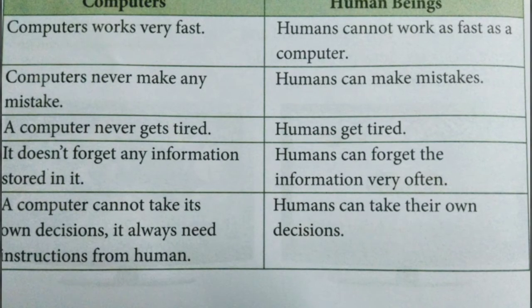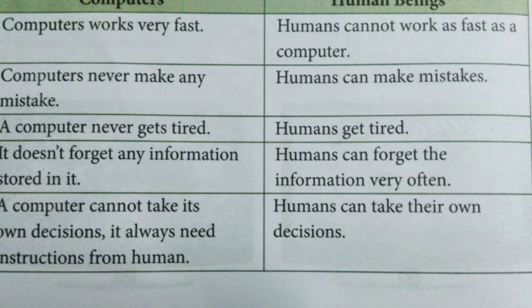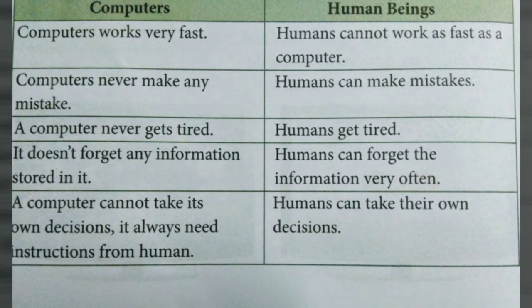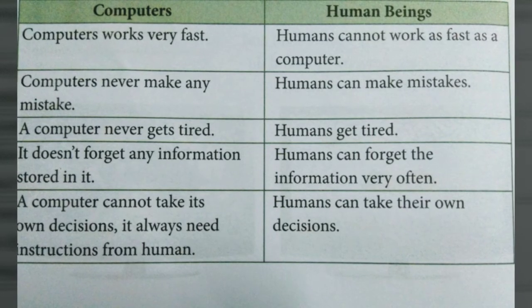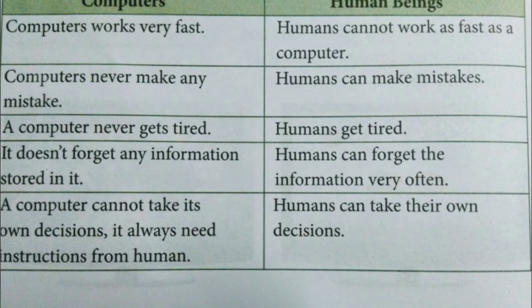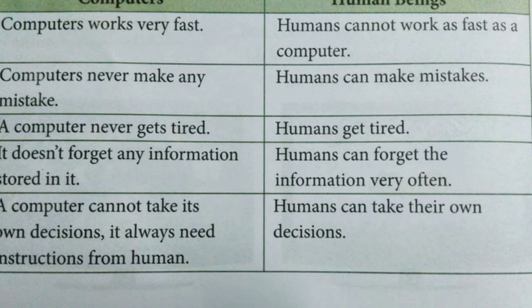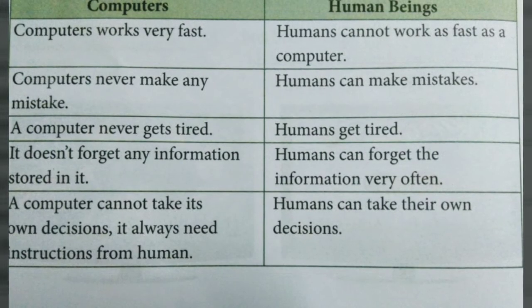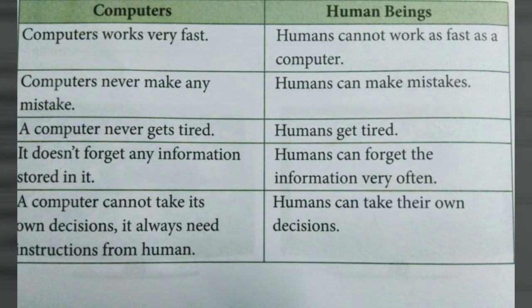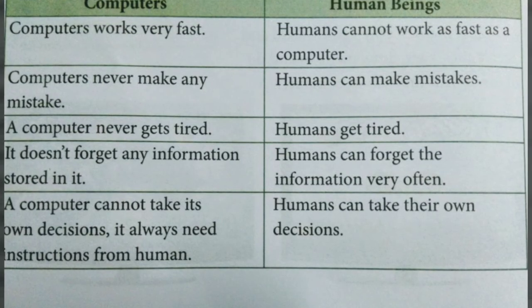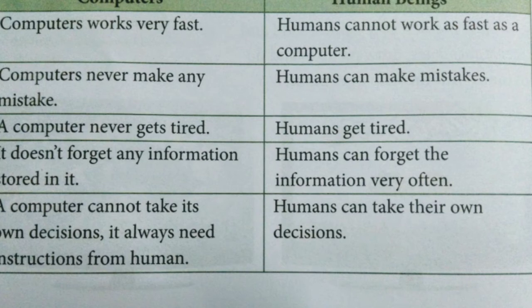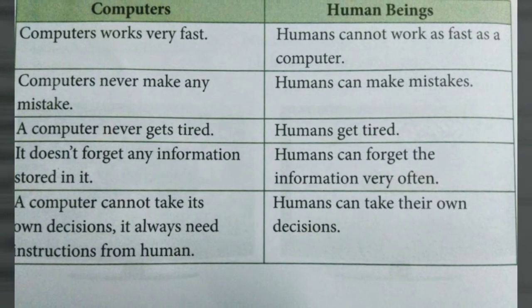Computers vs. Human Being. Computers work very fast; humans cannot work as fast as a computer. Computers never make any mistake, but humans can make mistakes. A computer never gets tired, while humans get tired. A computer does not forget any information stored in it, but humans can forget information very often. A computer cannot take its own decision — it will always need instructions from humans. Humans can take their own decision.